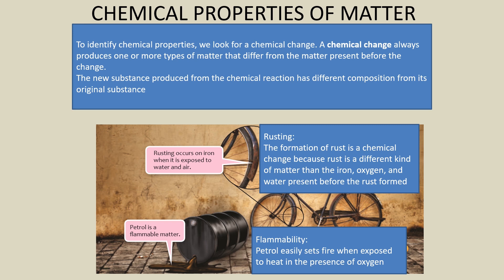Let's look at chemical properties of matter. To identify chemical properties, we look for a chemical change. A chemical change always produces one or more types of matter that differ from the matter present before the change. The new substance produced from the chemical reaction has a different composition from its original substance. For example, rusting occurs on iron when it is exposed to water and air — rusting is a chemical property. The formation of rust is a chemical change because rust is a different kind of matter than the iron, oxygen, and water present before the rust formed.